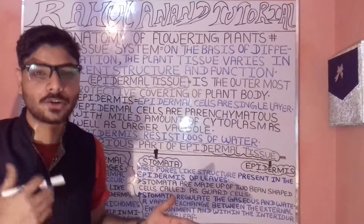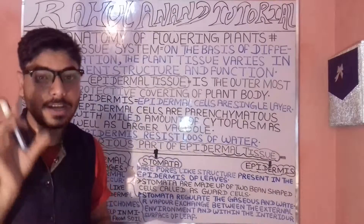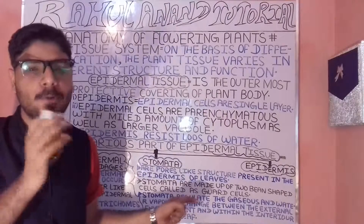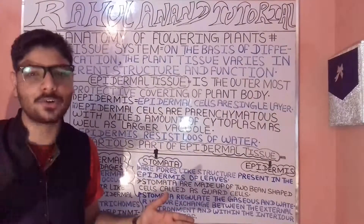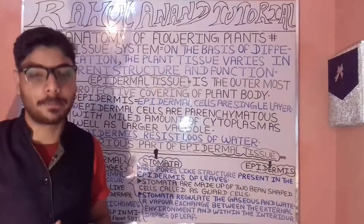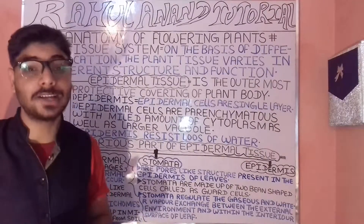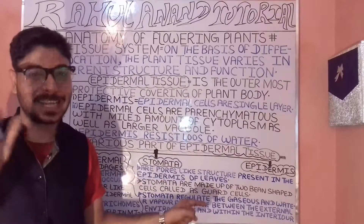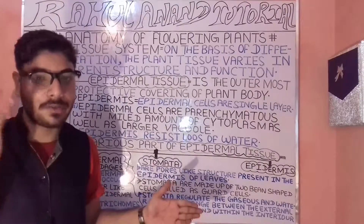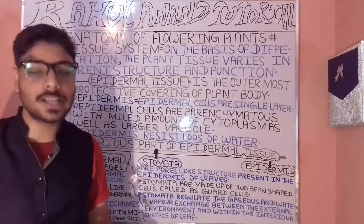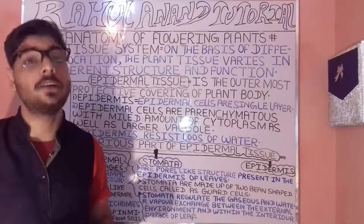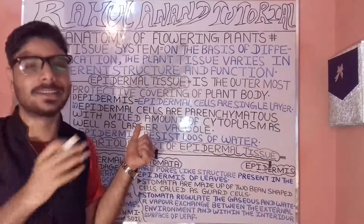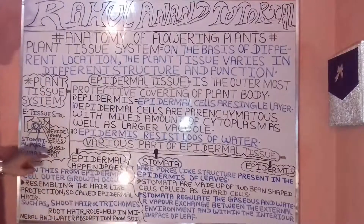Stomata play an important role in gaseous exchange as well as water vapor exchange. The stomata regulate gaseous exchange and water vapor exchange between the external environment and the internal surface of the leaves. On the board you can find the particular structure and diagram of epidermal cells as well as stomata, which bear subsidiary cells.